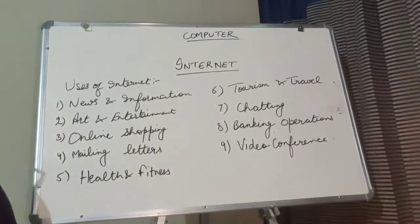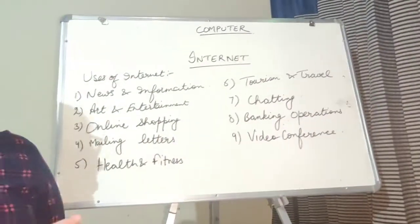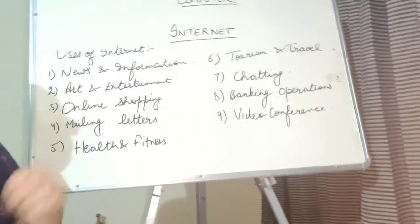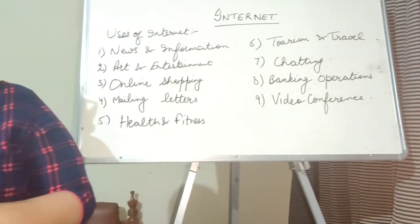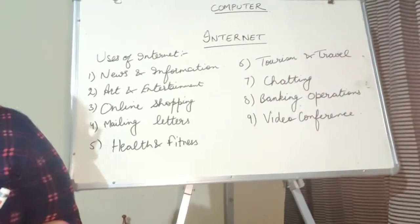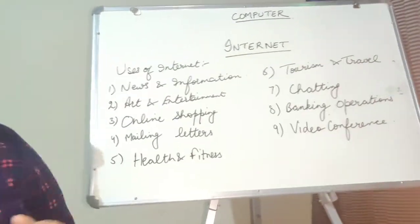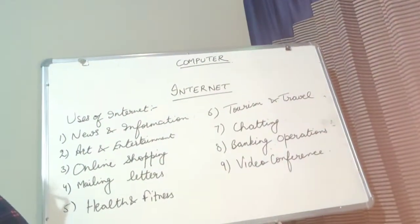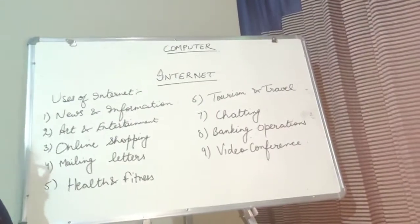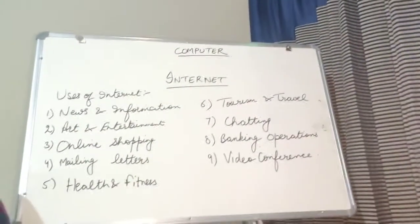Online shopping that is the main point. Aajkal log kitni online shopping karte hai. Aapke ghar me bhi kuch na kuch aa jata hoga. Kabhi ebay se, kabhi amazon se, kabhi flipkart se. These are all online shopping sites. Online shopping me kya hota hai? Aap koi bhi cheez ko website pe jao, waha pe dekho, aapko koi bhi product pasand aaya, aapko koi dress sundar pasand aaya, aapko koi shoes pasand aaya, aapko koi hair accessories pasand aaya hai.